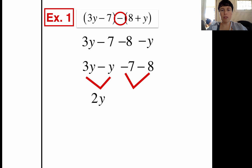So it would be negative 7 plus negative 8, which is same signs, add and keep. So it would be negative 15. So our simplified solution is 2y minus 15.